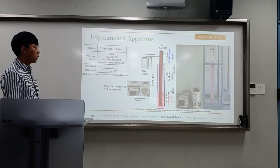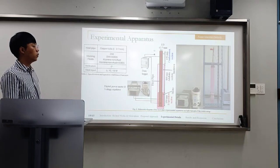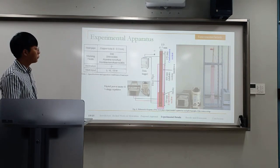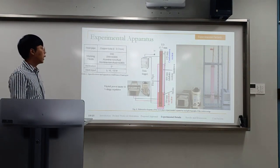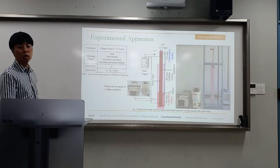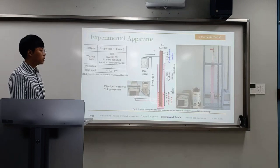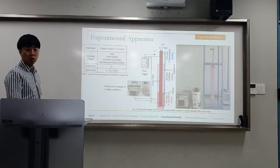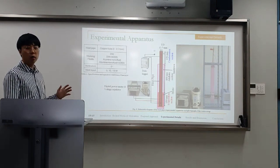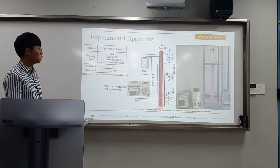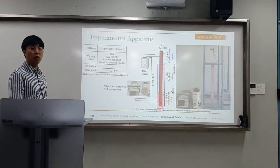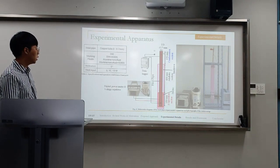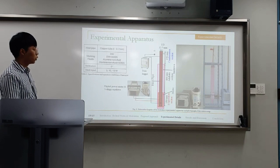The schematic diagram of the heat pipe experimental apparatus and photograph of the entire setup is shown in figure 8. The heat pipe was fabricated from a copper tube and consists of three main sections: the evaporation section, the adiabatic section, and the condensation section. The heating system uses a resistance wire heater, with heat input adjusted to 5, 10, and 15 watts using a voltage regulator.